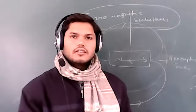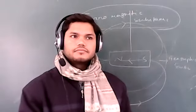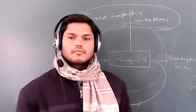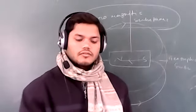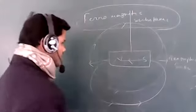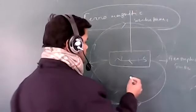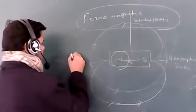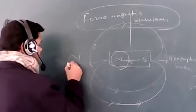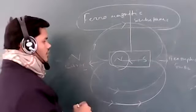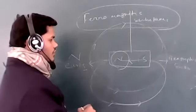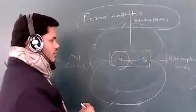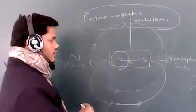A student explains: in the geographic south of the earth there is a big north magnetic pole, and in the geographic north side of the earth there is a big south magnetic pole — that is why the magnet is attracted in that direction. In the north side of the earth, the magnet's south pole is pointing, and in the geographic south of the earth, the magnet's north pole is pointing — that is why.